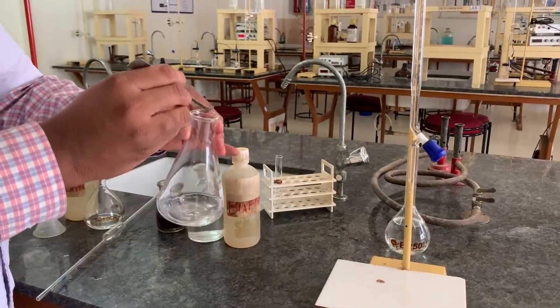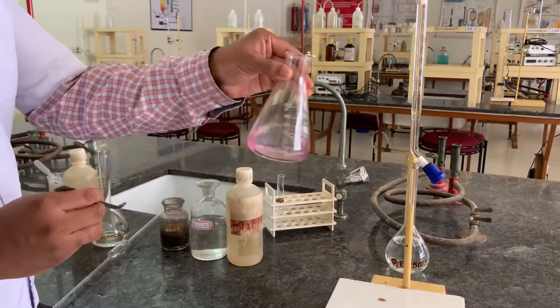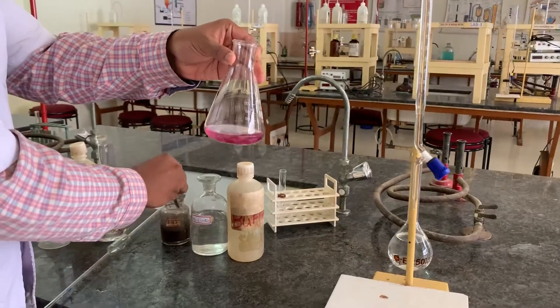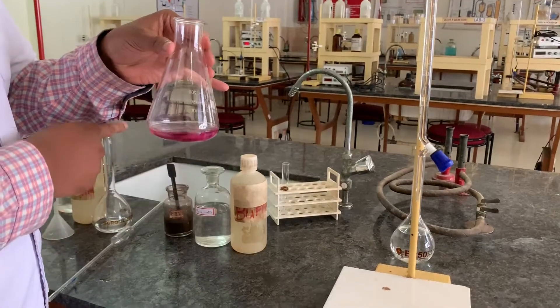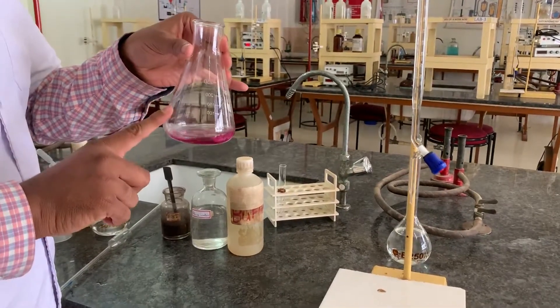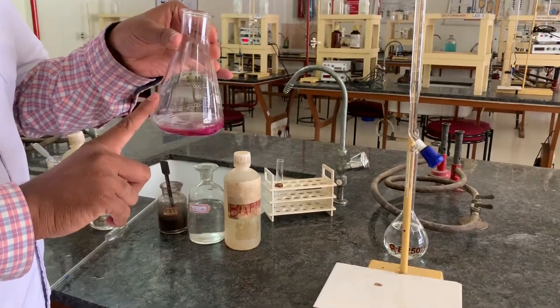You can observe that as soon as eriochrome black T indicator is added, the color of the solution turned into wine red. This indicates that there is a formation of complex between eriochrome black T indicator and calcium and magnesium ions present in the hard water.